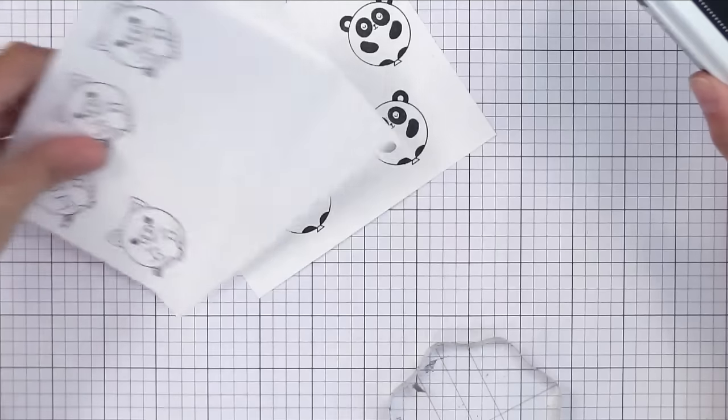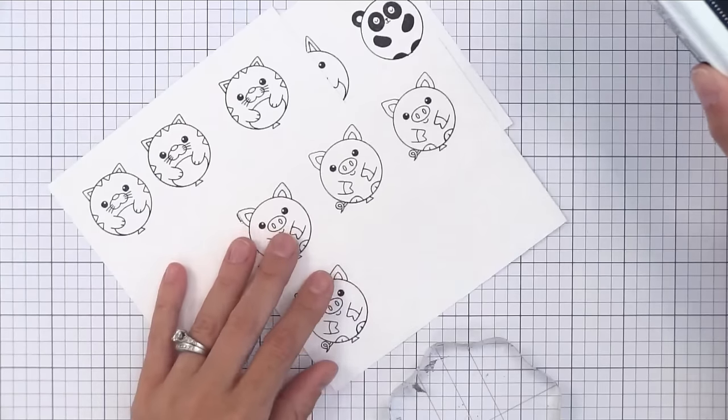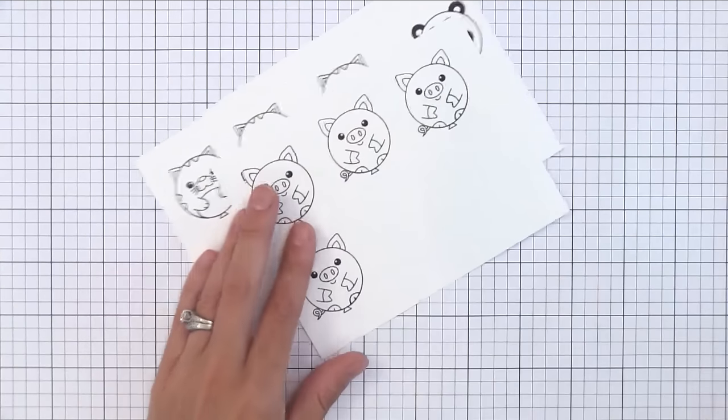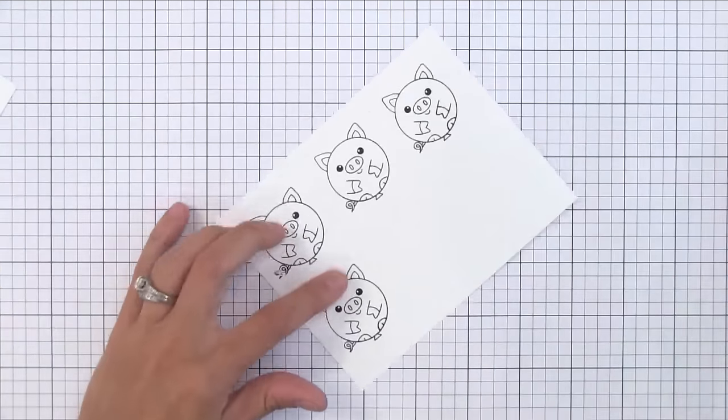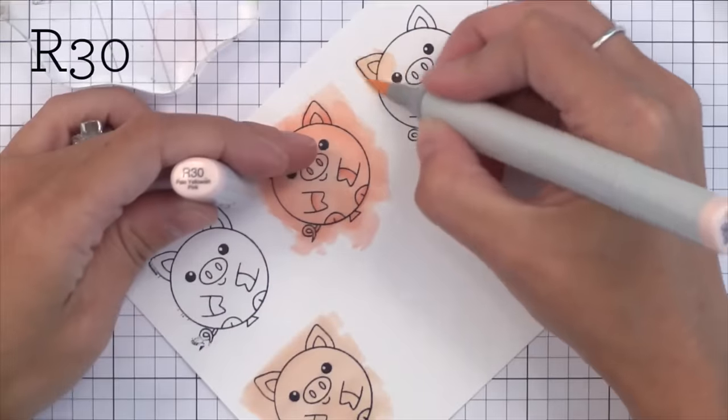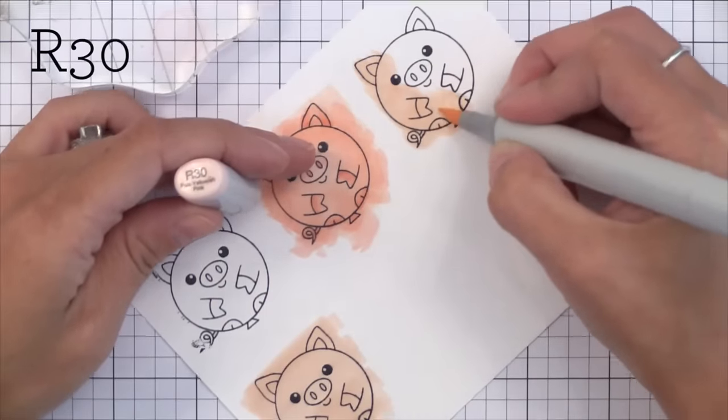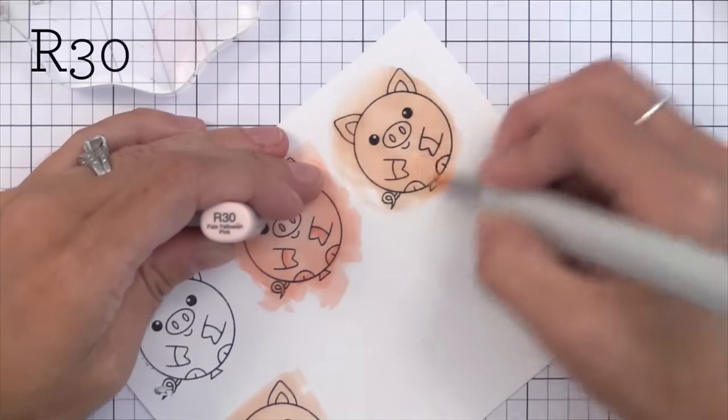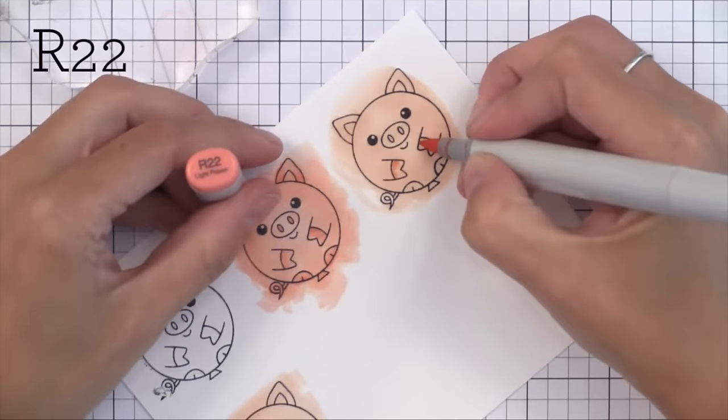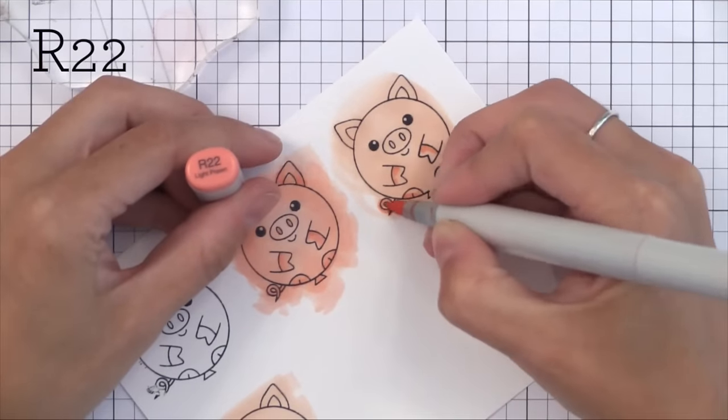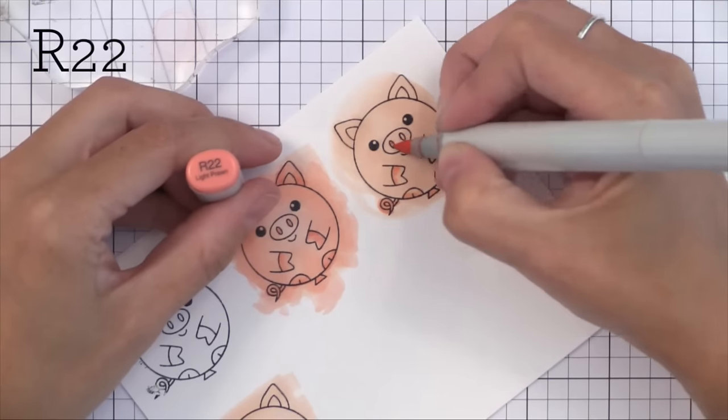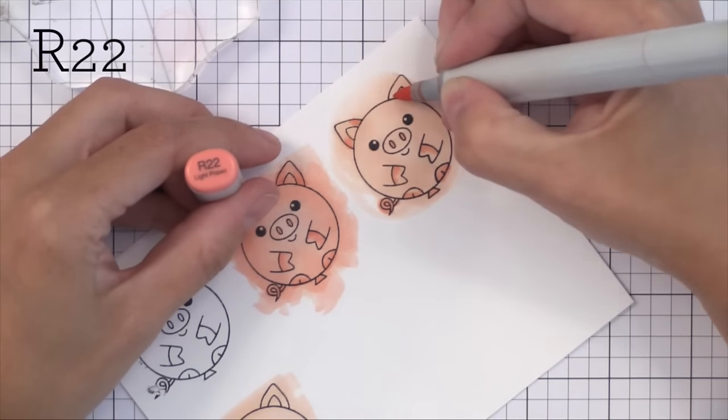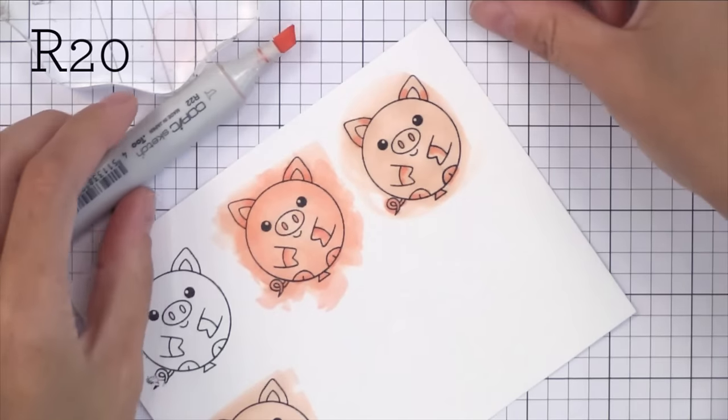Now I went ahead and stamped a bunch of the birthday balloons with the My Favorite Things Black Hybrid ink. That's my favorite ink for Copic coloring. I've stamped it on Neenah white card stock. Now to do the coloring here I'm going to go super quick. I am coloring the pig first with R30 which is my lightest peachy pink color. Then I'm coming in with my darkest peachy pink which is R22 and just adding some little bit of dark color here and there into some of the areas where I would want to shadow.